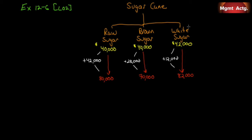The joint cost of sugar cane up to the split-off point doesn't matter for our decision — all costs incurred before that are irrelevant for any decision going forward. Each product may be sold at the split-off point or processed further. Additional processing costs and sales values after further processing: raw sugar sells for eighty thousand, brown sugar for seventy thousand, white sugar for eighty-two thousand.